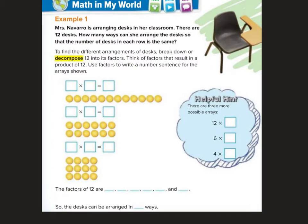Alright here we have example 1. Miss Navarro is arranging desks in her classroom. There are 12 desks. How many ways can she arrange the desks so that the number of desks in each row is the same? To find the different arrangements of desks we need to break down or decompose 12 into its factors.